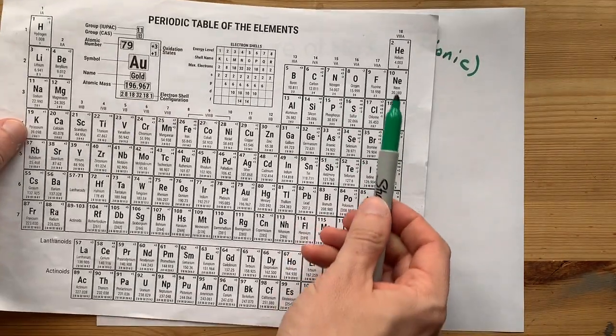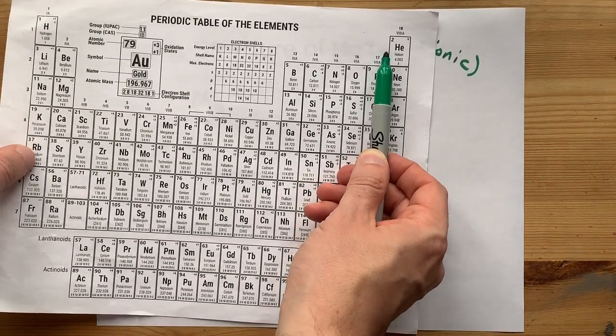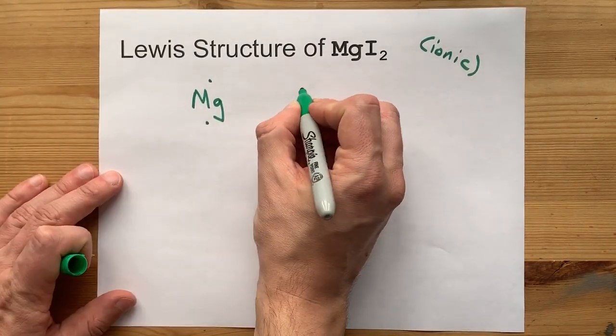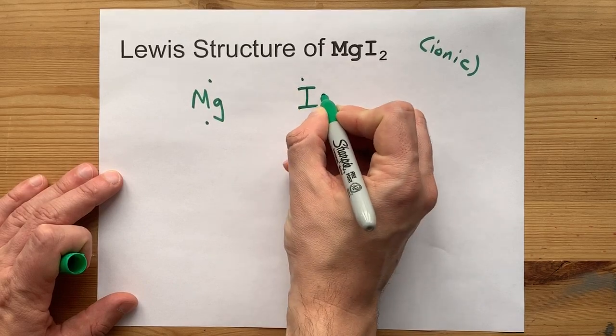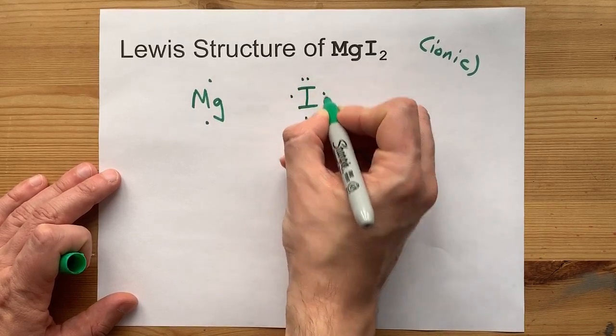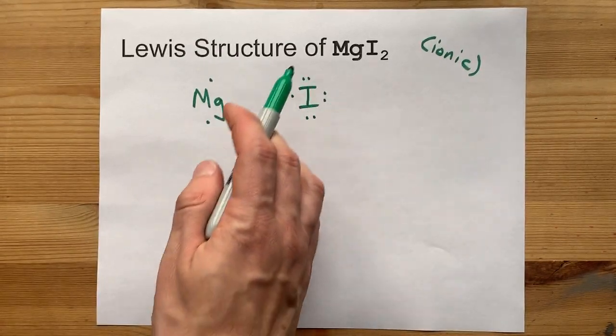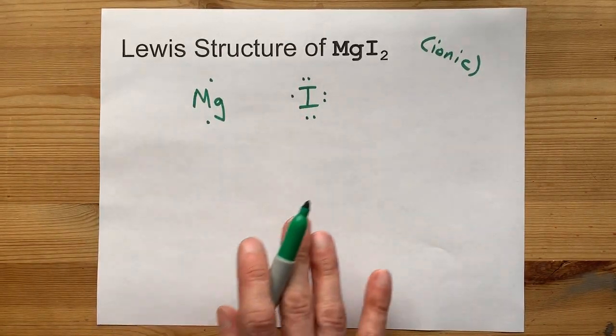Iodine is in group 17. All of these atoms bring seven valence electrons with it. So draw your I: one, two, three, four, five, six, seven valence electrons. Notice how I spread them out before I started doubling them up.